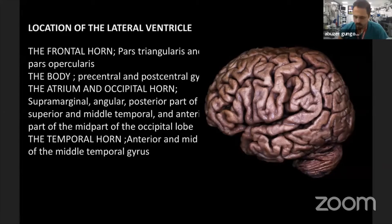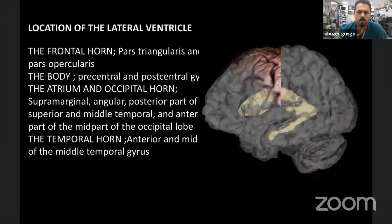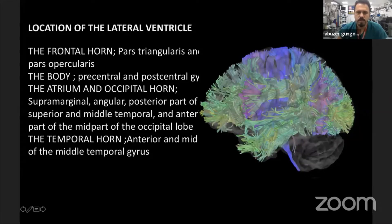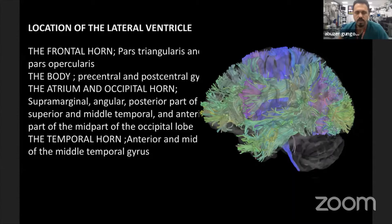You must know the ventricle anatomy: the frontal horn corresponds to the pars triangularis and pars opercularis; the body corresponds to the central and post-central gyri; the atrium and occipital horn correspond to the supramarginal, temporal gyri, and anterior occipital lobe; and the anterior temporal horn corresponds to the anterior and mid part of the middle temporal gyrus. These regions are covered by the white matter tracks.